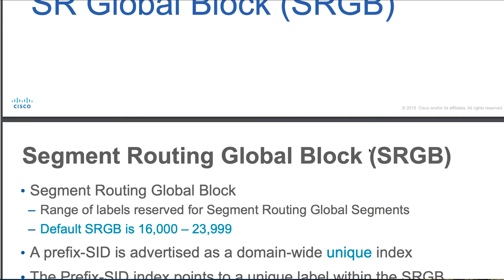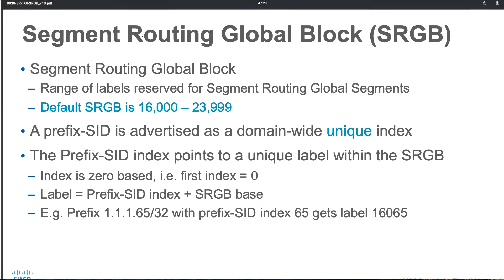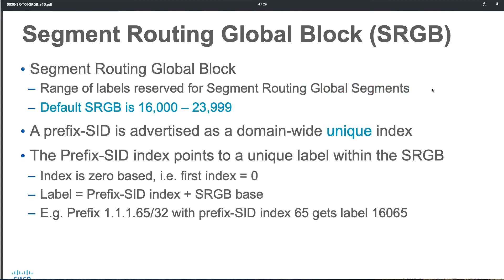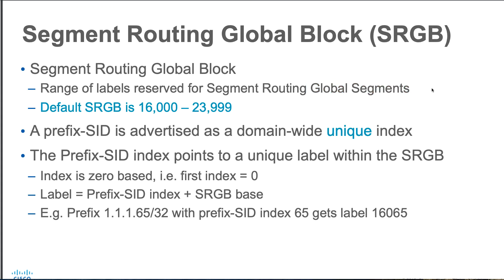sRGB stands for segment routing global block. It's a range of labels reserved for segment routing, specifically reserved for global segments. We talked about global segments versus local segments. The default range for the sRGB starts from 16,000 and goes all the way to 23,999. A prefix SID is advertised as a domain-unique index.